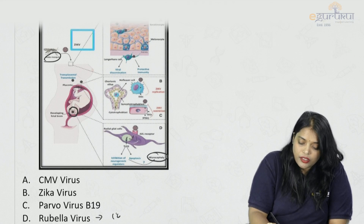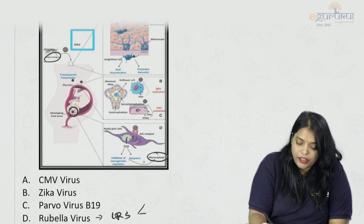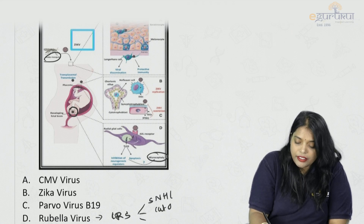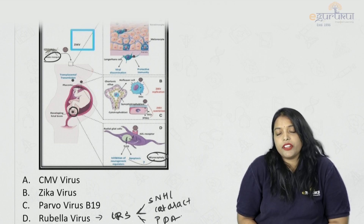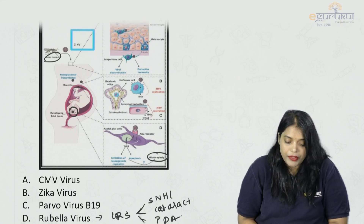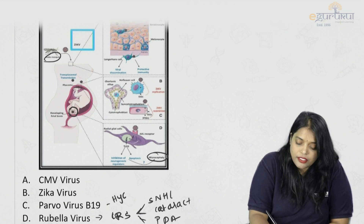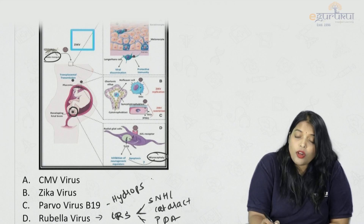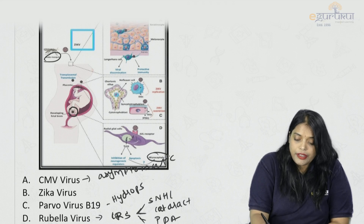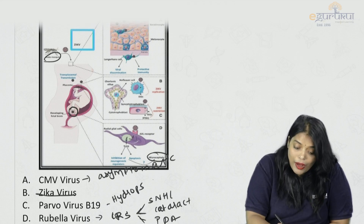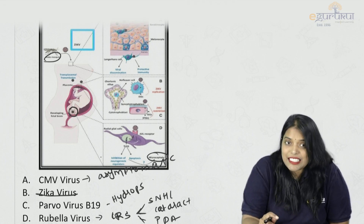Rubella virus mainly causes congenital rubella syndrome, which includes a triad of sensorineural hearing loss, cataract, and heart lesion — that is PDA. Parvovirus causes hydrops fetalis; it is the most common cause of non-immune hydrops fetalis. Cytomegalovirus: most of the time, around 80% of cases are symptomatic and usually less lethal to the baby. Zika virus is transmitted by Aedes aegypti.